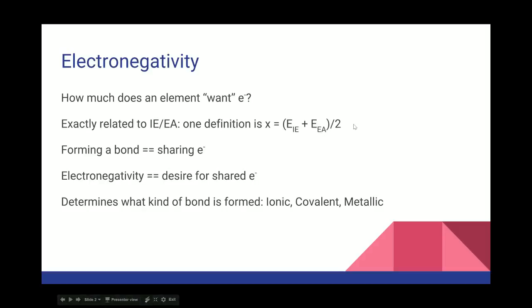When atoms form a bond of some kind, then they're going to be sharing electrons in some way. And electronegativity is how much each atom in the bond wants the electrons they're sharing. And so this determines what kind of bond is formed. An ionic bond, a covalent bond, or a metallic bond.